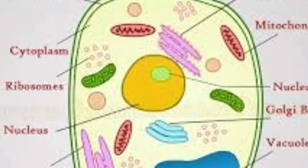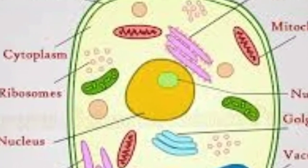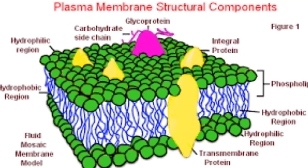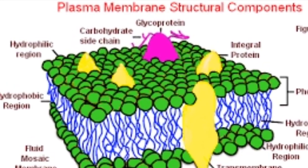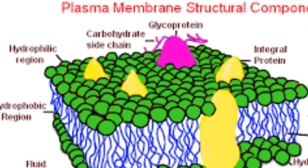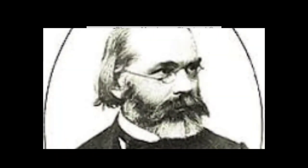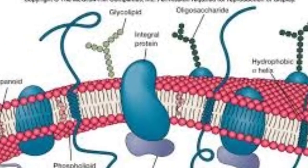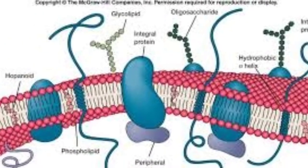Plant cell was discovered by Robert Hooke and it contains many cell organelles. The outer membrane of the cell is known as plasma membrane. It was discovered by Carl Nageli in 1855, and it protects the cell and regulates inflow and outflow.